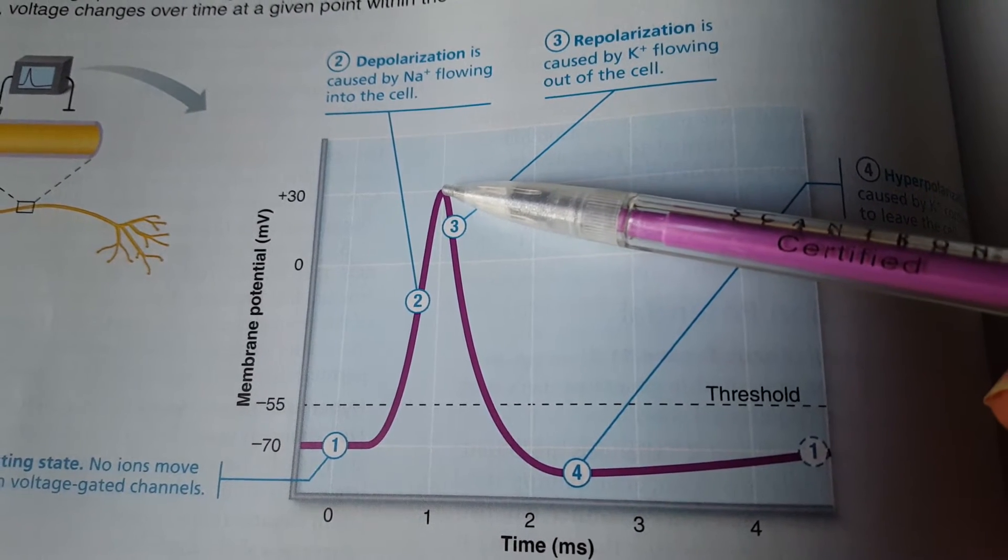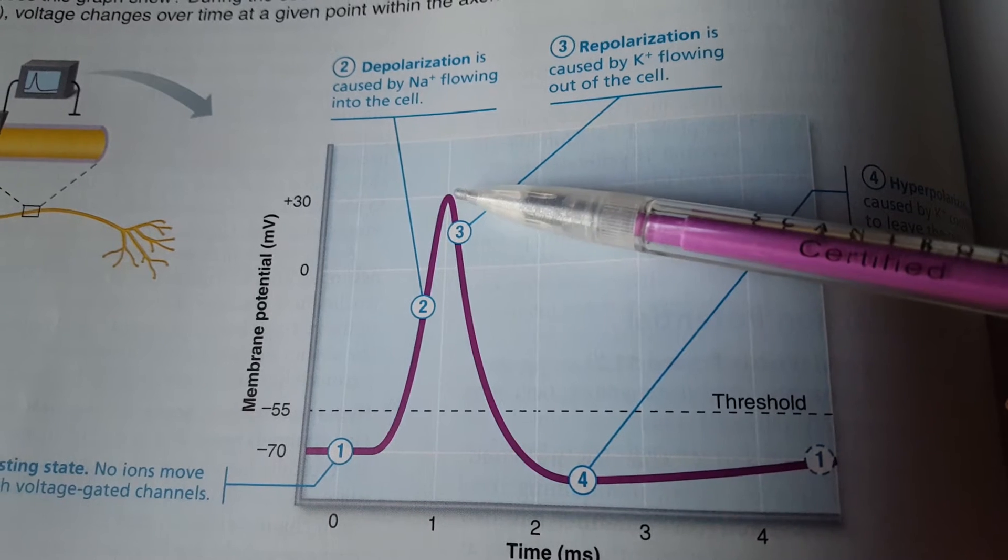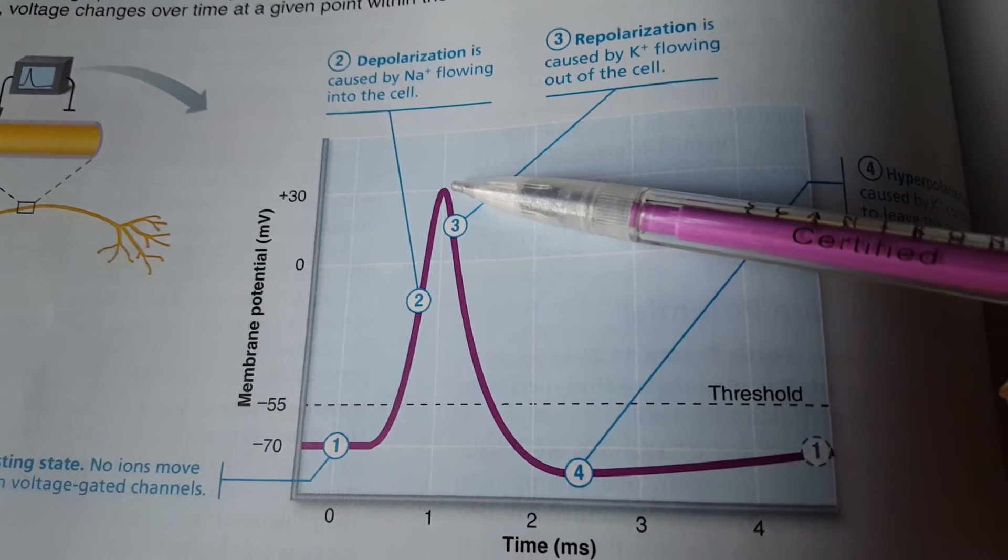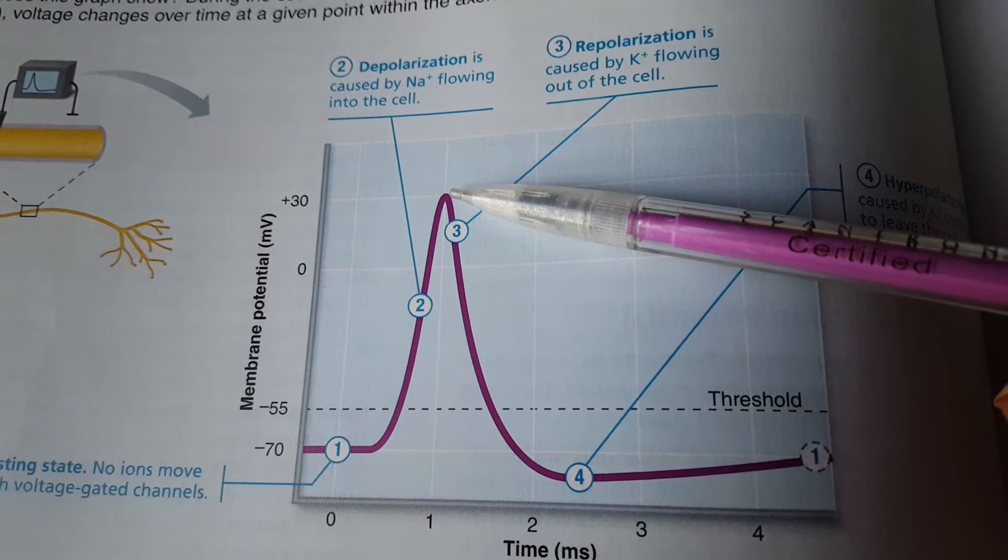But at the peak another event is going to occur, and that's the potassium voltage-gated channel that opens up. So potassium voltage-gated channels open up now.